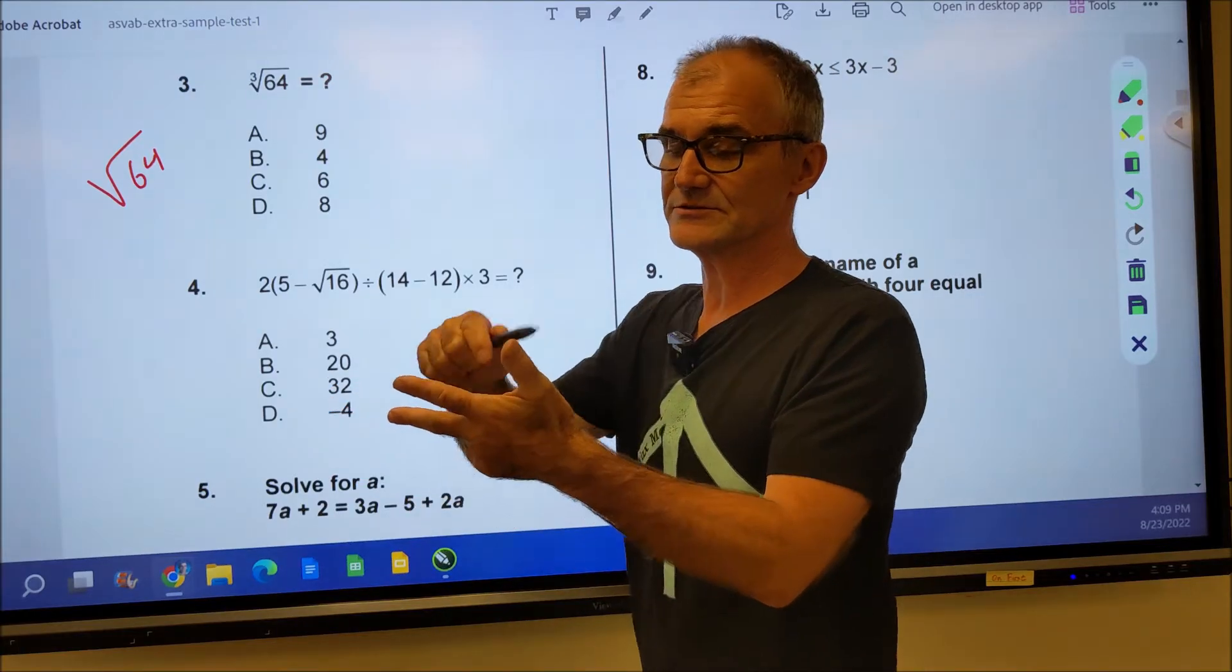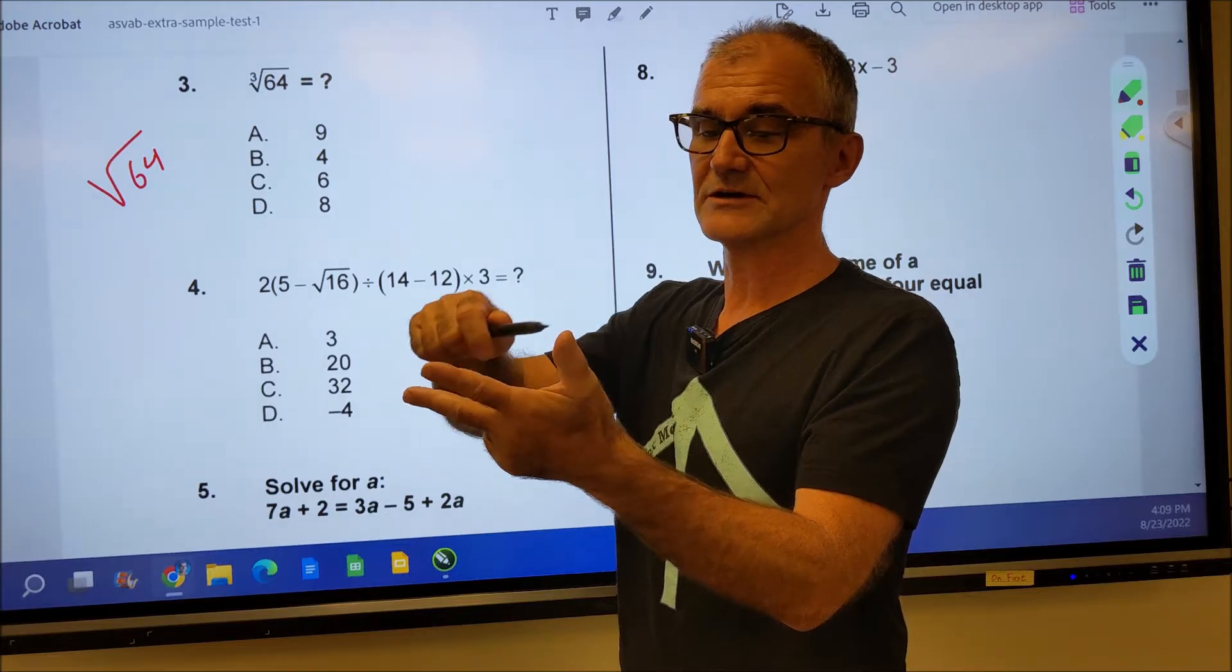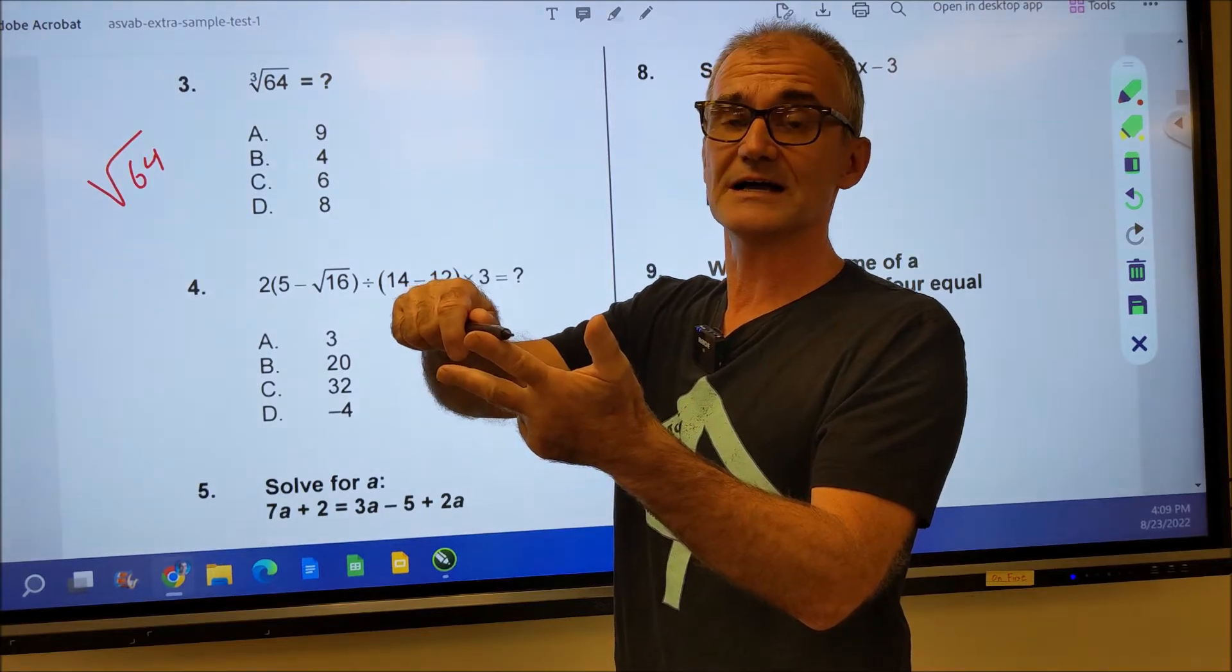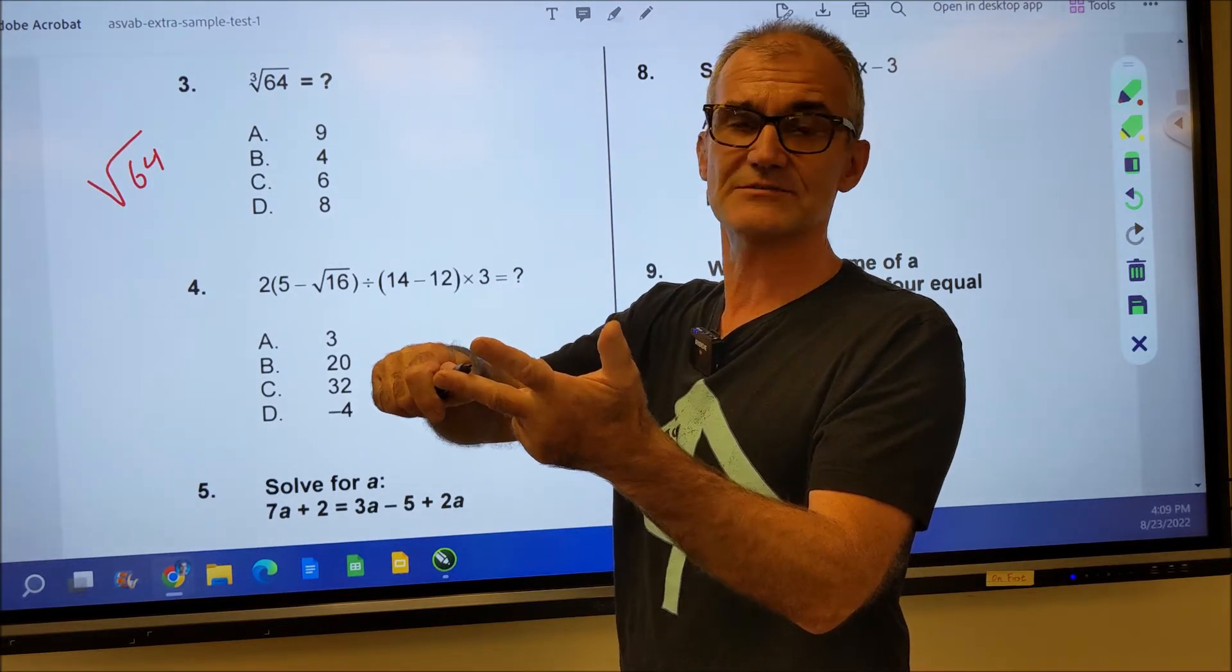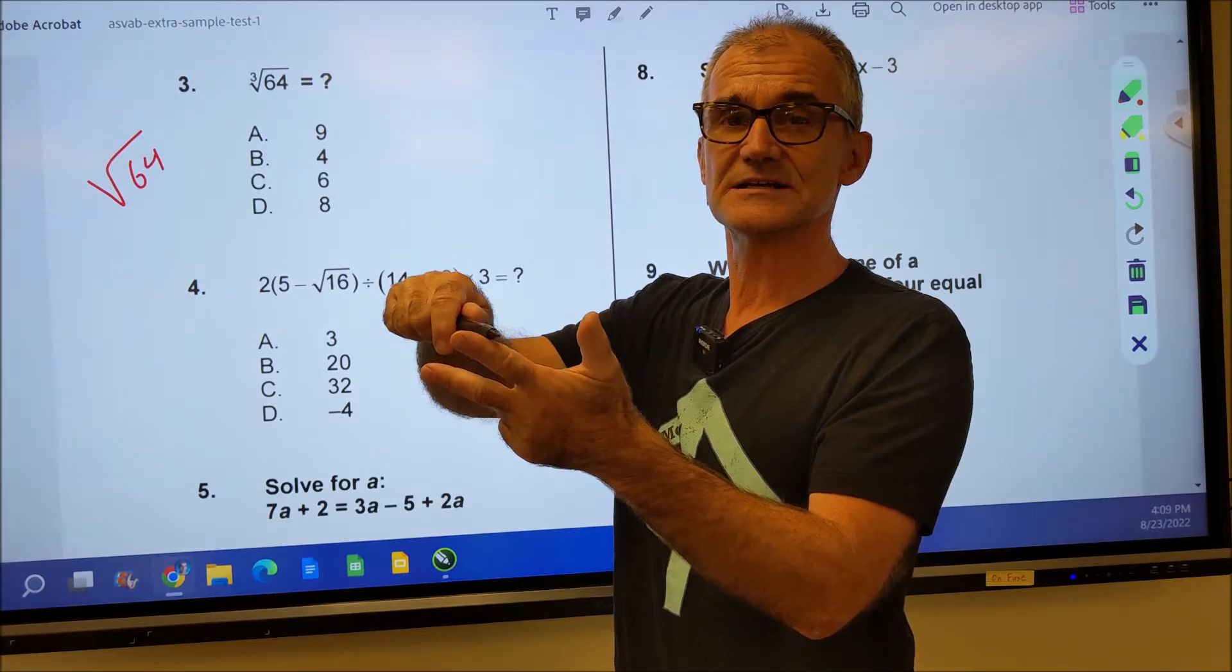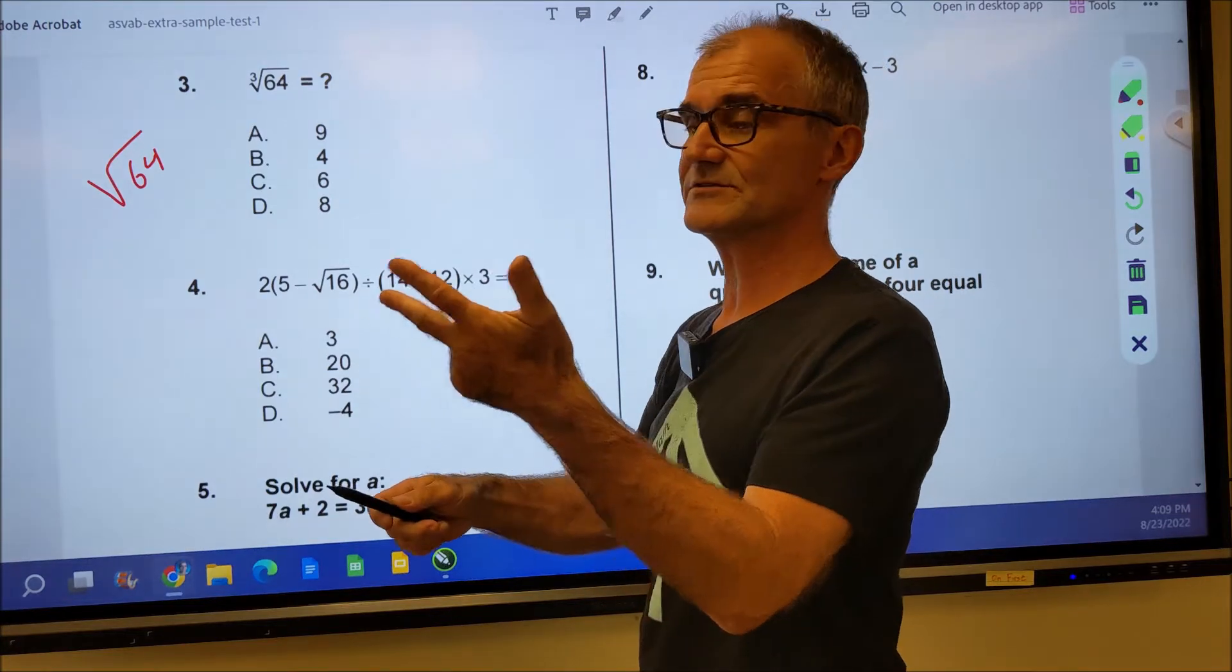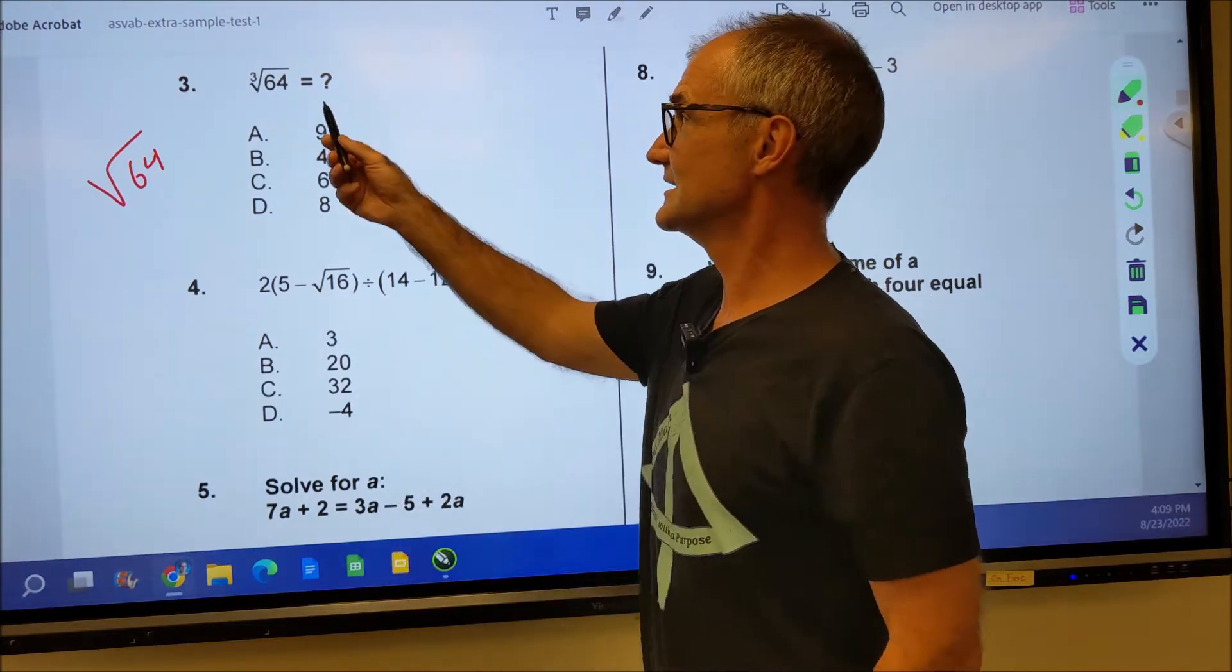So I got to just kind of through trial and error figure out what number times itself times itself is equal to 64. I'll just start with two, two times two, four times two, eight, way too low. Three times three, nine times three, 27, way too low. Four times four, 16. 16 times four, 64.